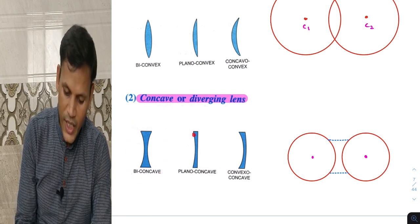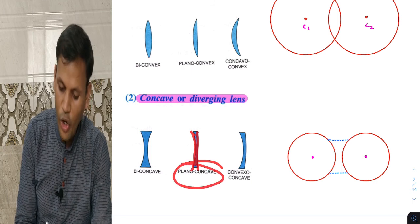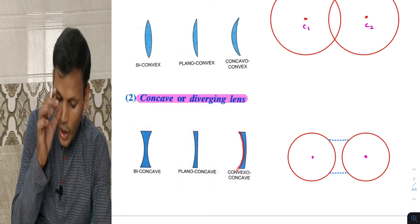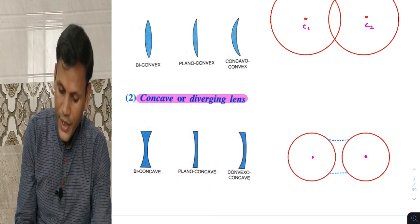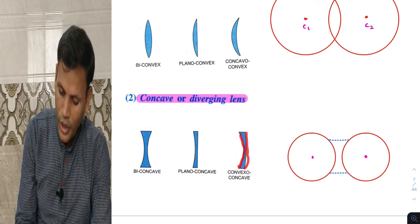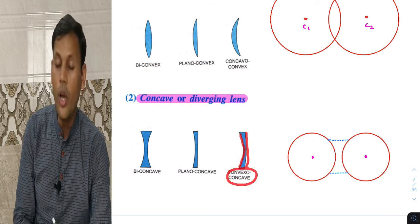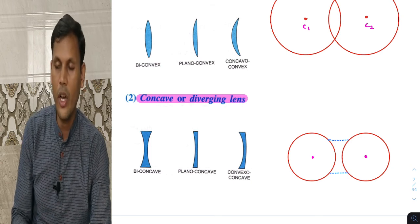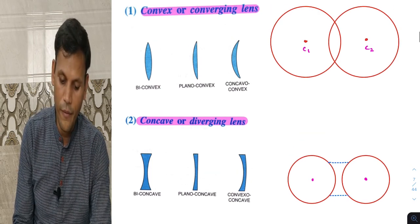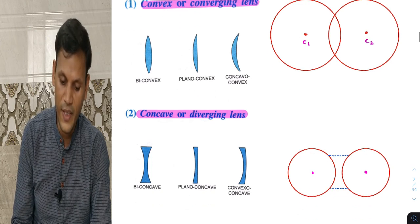If one side is plane and another is concave, it is plano-concave. If one side is convex and another is concave, it is concave-convex. These are all the types and kinds of lenses.